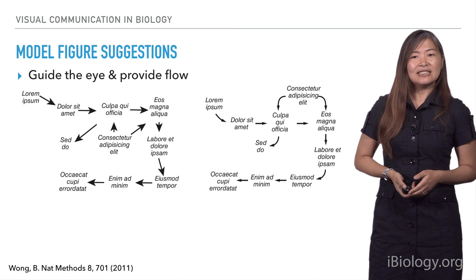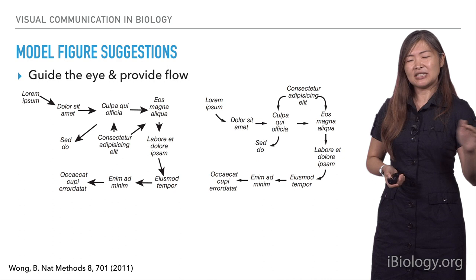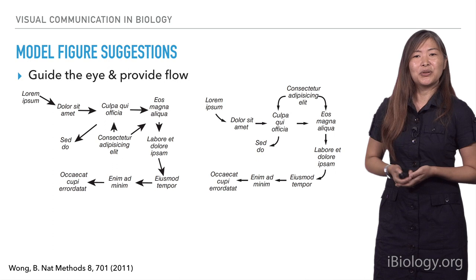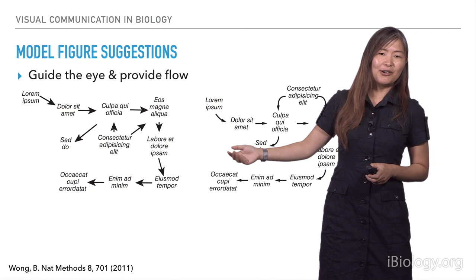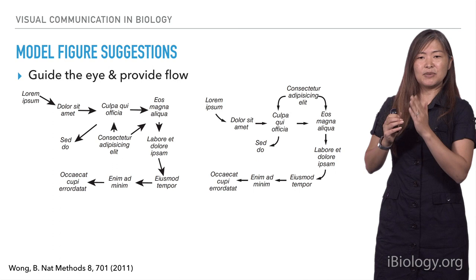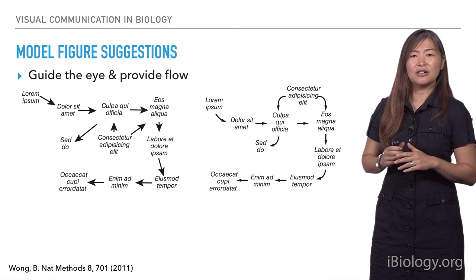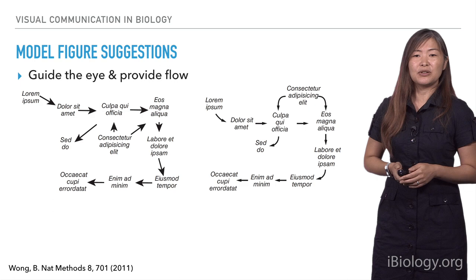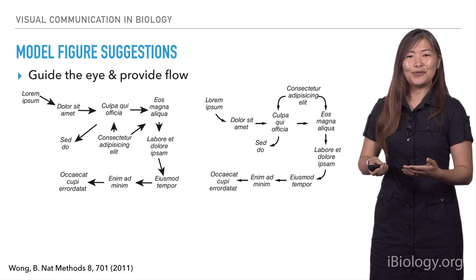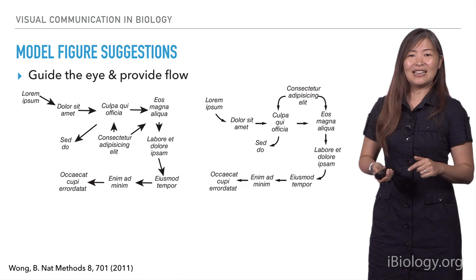Another suggestion is that you want to guide your viewer easily through a figure, especially a multi-component figure where you have a lot of different parts. The most common way is using arrows, and you can be smart about how you use them. In these two examples, one uses a straight arrow with a large arrowhead, while the other has the same elements rearranged with curved arrows and smaller arrowheads. The flow of the figure — where your eye is supposed to go — is a lot more clear in the second. If people are looking at things in the wrong order, you know you need to provide better flow.